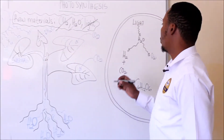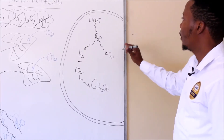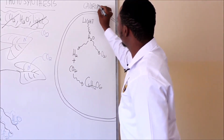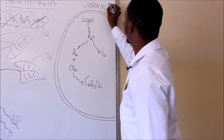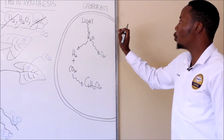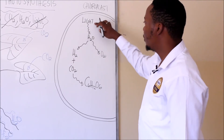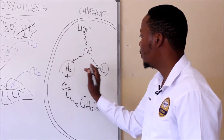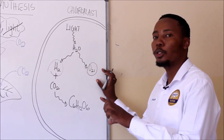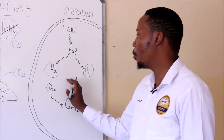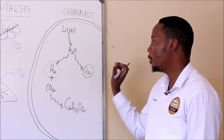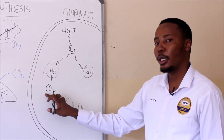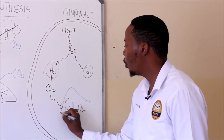So if you look at this diagram here, this is a chloroplast. It shows a chloroplast. We are going to have light energy breaking down a water molecule into oxygen and hydrogen. This oxygen is going to pass through the airspace and then escape through the stomata to the environment. The remaining hydrogen will combine with carbon dioxide and then form a sugar called glucose.